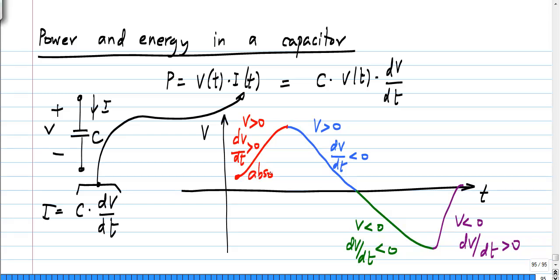So, depending on the voltage value and its rate of change, the capacitor can be either absorbing or delivering power. In parts of the waveform it absorbs power, in others it delivers power, and in the green part again it absorbs power. All these things are possible. Now, if the power delivered to the capacitor can be both positive and negative, how do you tell if the capacitor is a passive element or not?